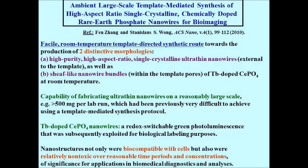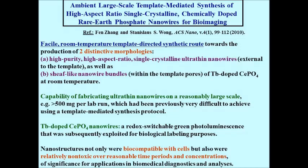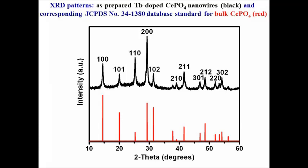We could make ultra-thin nanowires on a reasonably large scale. The terbium-doped cerium-phosphate nanowires, for the purpose of biology, exhibited a redox-switchable green photoluminescence that could be used for biological labeling. The nanostructures were not only biocompatible with cells but also relatively non-toxic over reasonable time periods and concentrations. An x-ray diffraction pattern shows these nanowires are very similar to what you'd expect for the bulk, and electron microscopy shows isolated, single crystalline wires with sharp diffraction patterns.